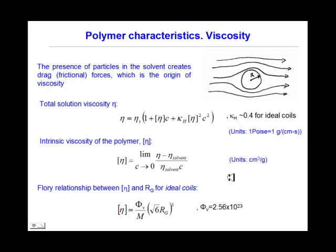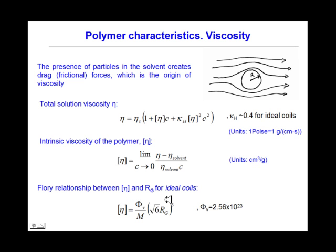Another important characteristic of a polymer is viscosity. The presence of particles in the solvent creates drag frictional forces, which constitute the origin of viscosity. The total solution viscosity is related through the polymer concentration by this equation. Hence, we can define the intrinsic viscosity of the polymer and the relationship between intrinsic viscosity and radius of gyration for an ideal coil.